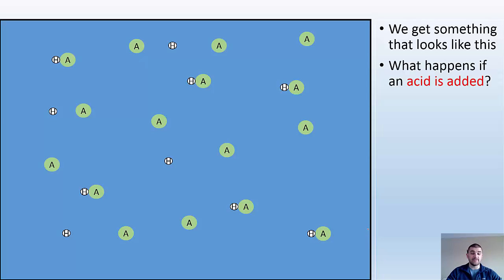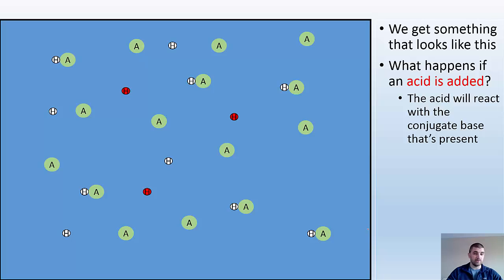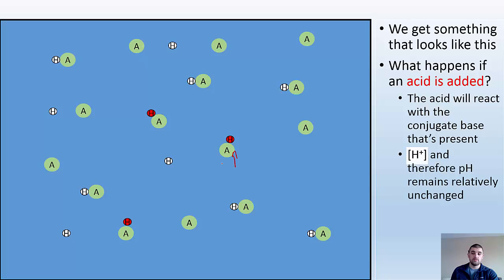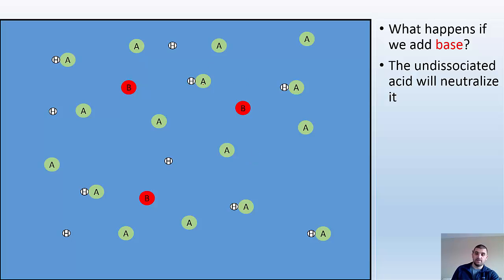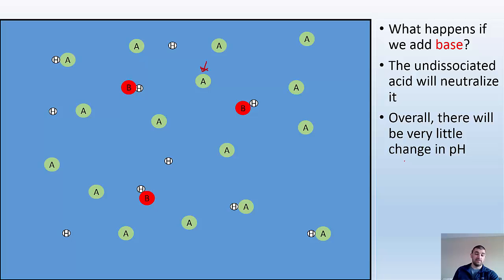Now let's see what happens when I add some acid. The acid is going to react with the conjugate base that's present — we add some more H+, and it's going to react with the A minus conjugate base floating around. They're going to react and bond. Overall, the amount of H+ in my solution hasn't changed a whole lot, so the pH stays relatively the same. What if we add a base? The undissociated acid is going to neutralize it by giving a hydrogen to the base. So added acid gets neutralized by the base there, and added base gets neutralized by the acid there. Overall, very little change in pH.